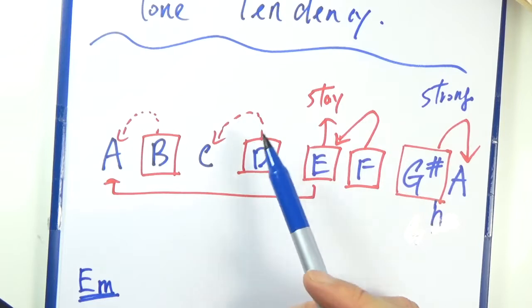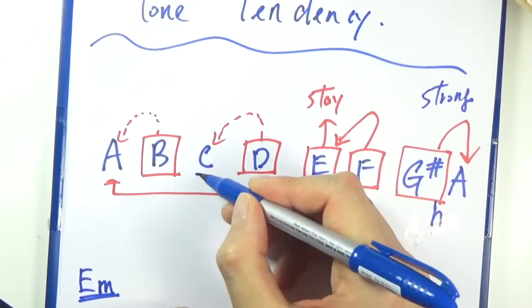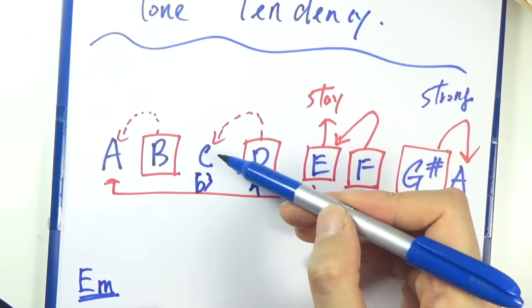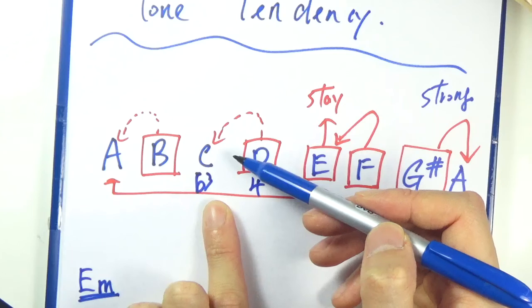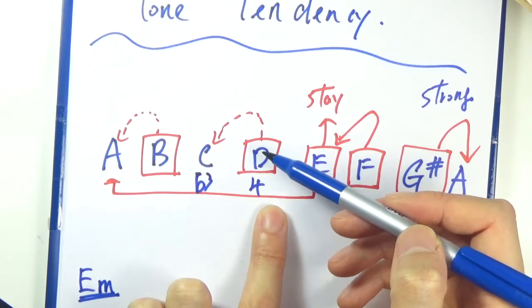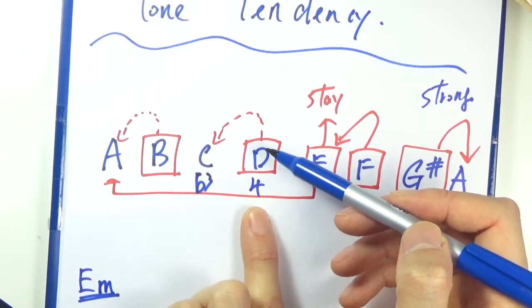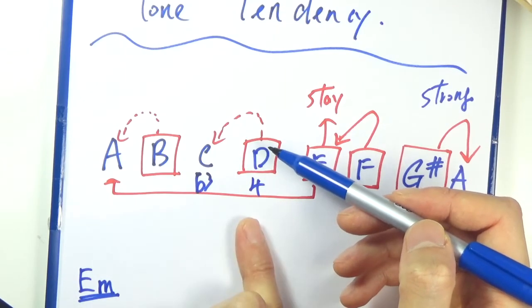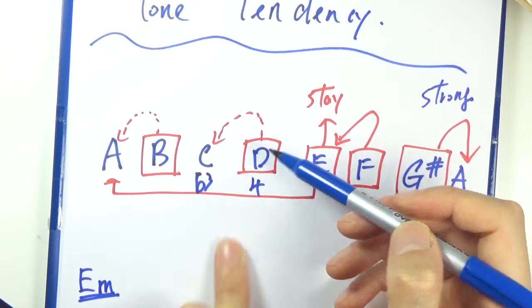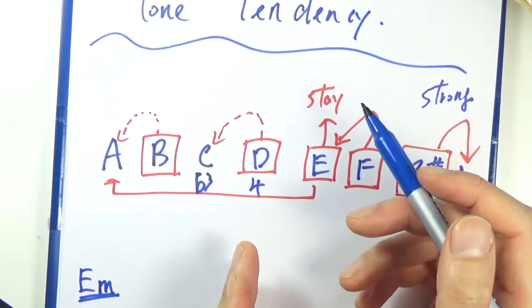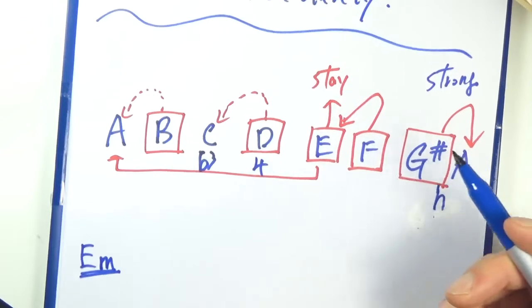D, in the same case, the fourth wants to go to the flat 3, it wants to resolve to flat 3. But it's also a weak tendency, a weaker tendency than the half steps because whole steps is a wider interval and the attraction is then smaller.